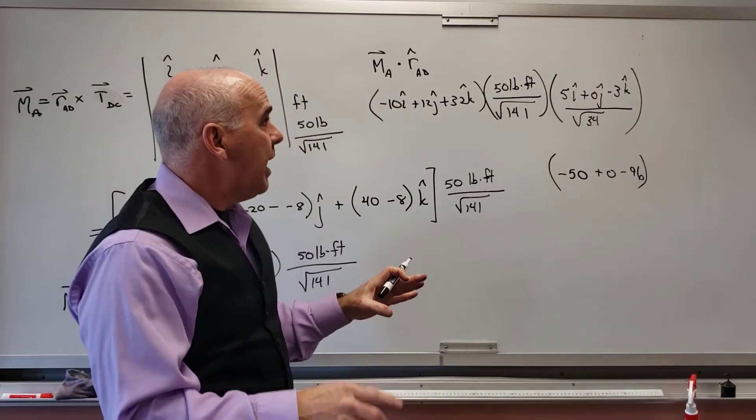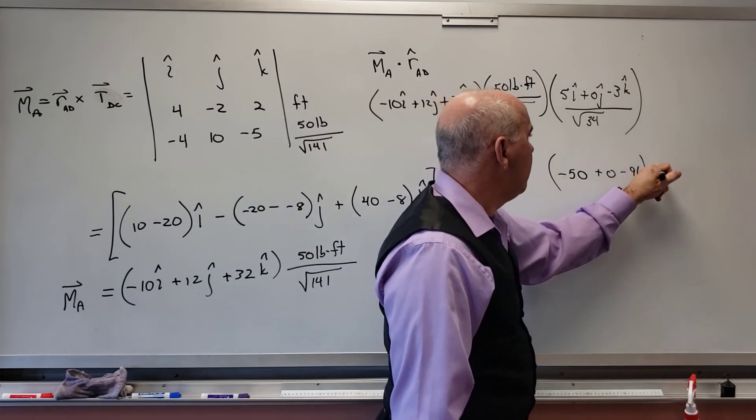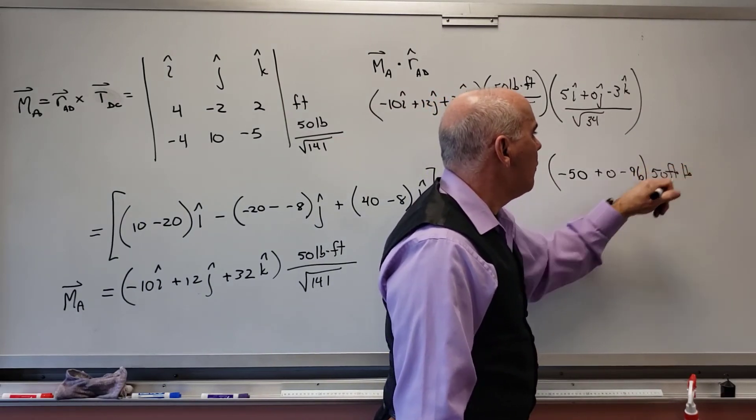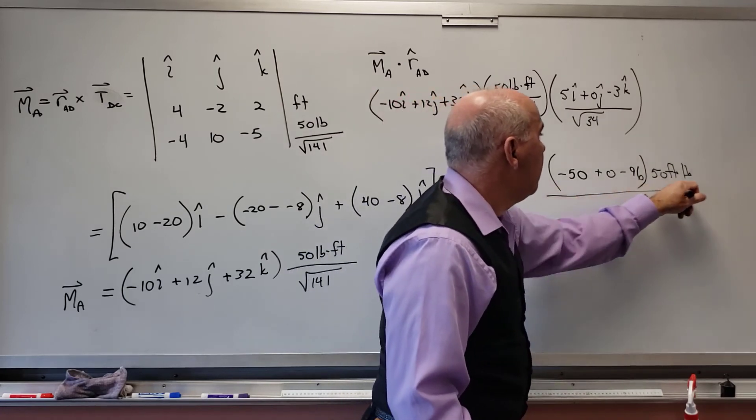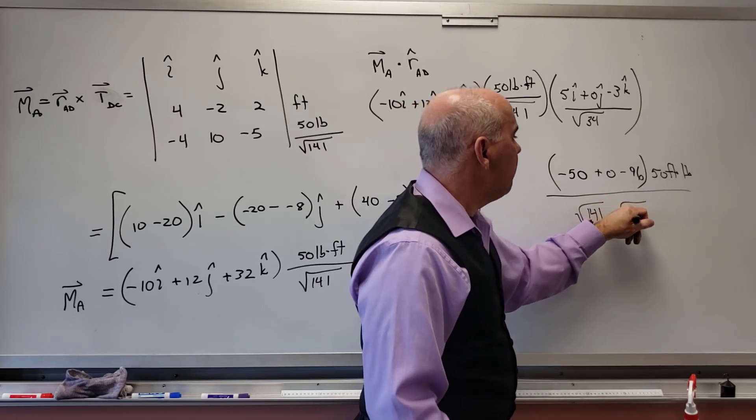And so when I do that, i times i, so that's -50. j times j, that's 0. And k times k is -96. No i's, j's, and k's. There are no i's, j's, and k's.